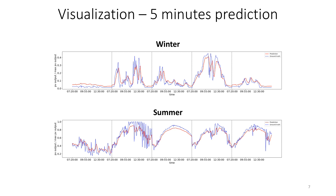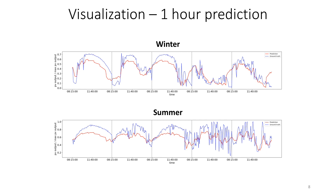You can see here a visualization of our results for five-minute prediction, in winter and in summer, for five random days. In red you can see the prediction of our best model, and in blue you can see the ground truth. The x-axis represents time and the y-axis represents PV power. We also show the same results but for a prediction horizon of one hour.